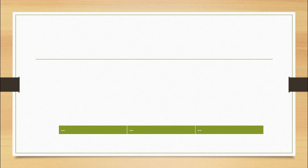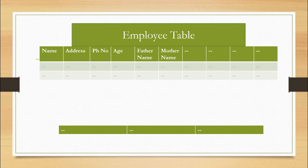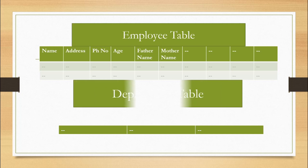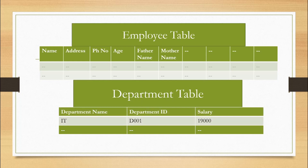Let's say we have an employee table and this employee table contains name, address, phone number, age, father's name, mother's name, and so on — columns for each employee of any company or organization. Now let's say we have a department table and that table may contain department name, department ID, and salary. From the employee table you can easily understand that this is the data which contains the details of any employee.